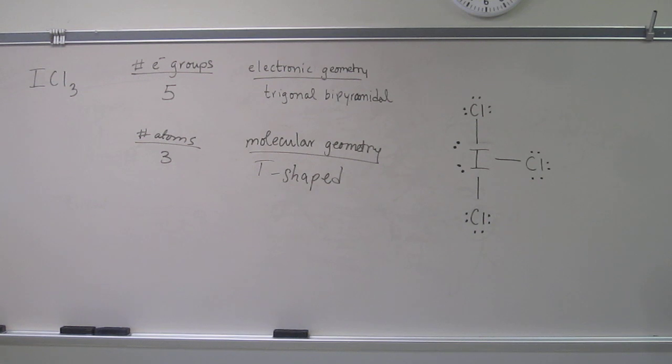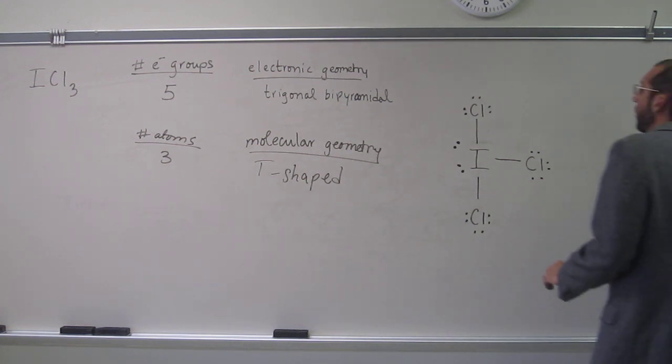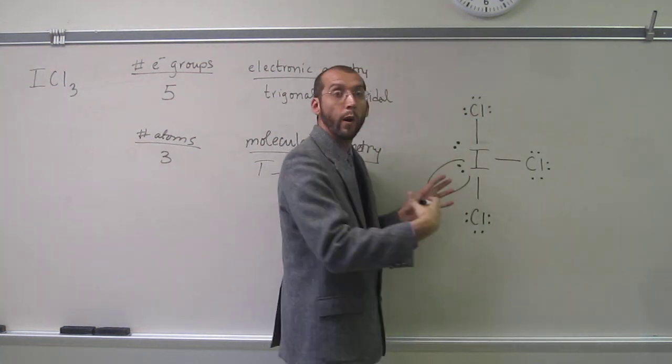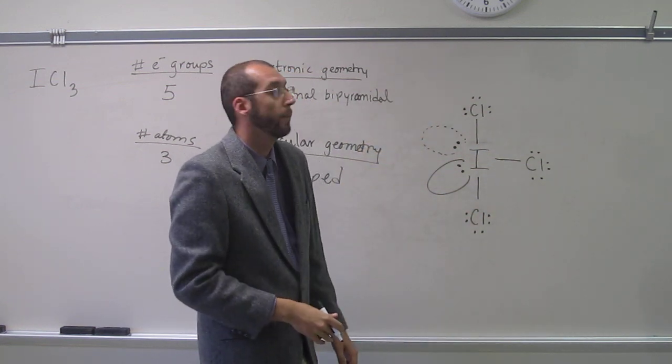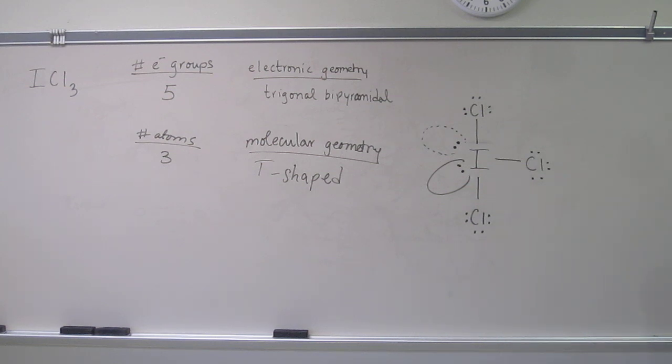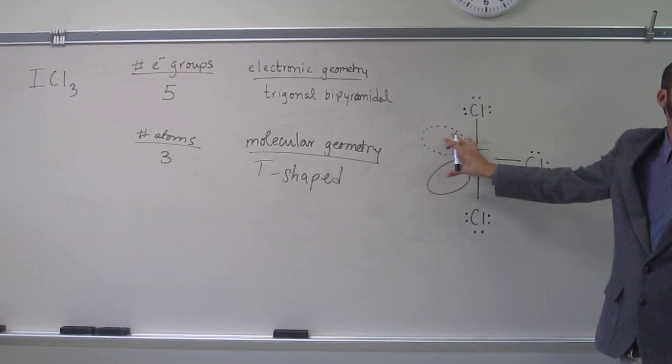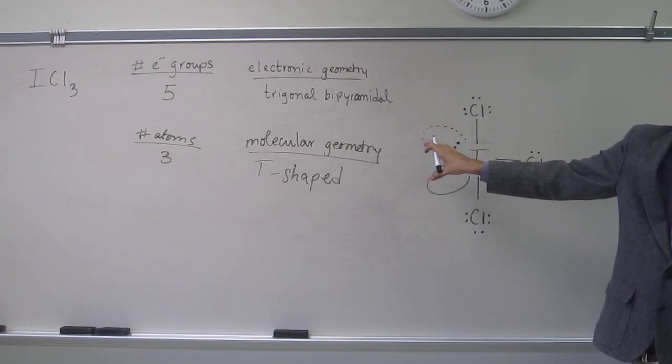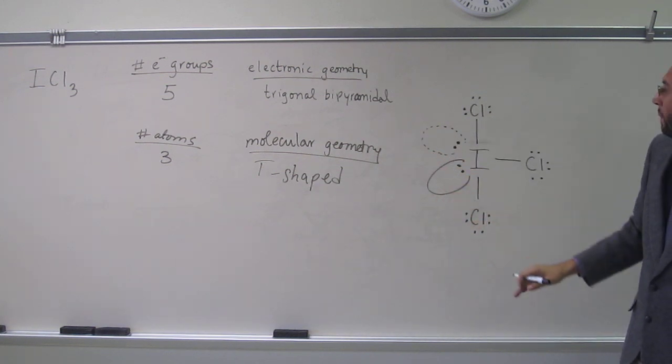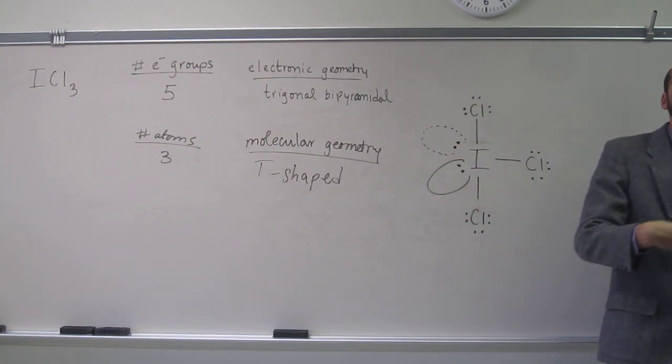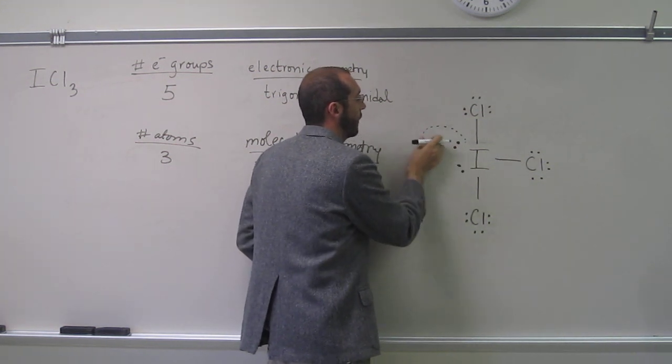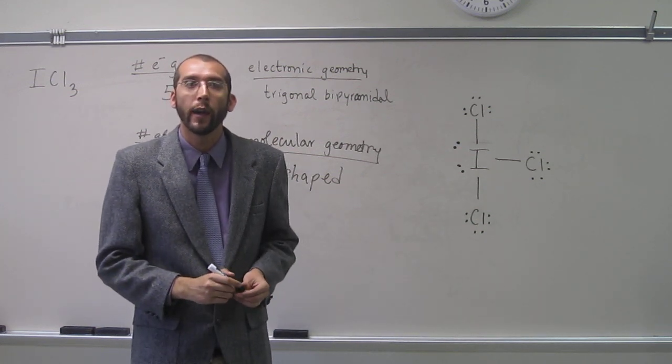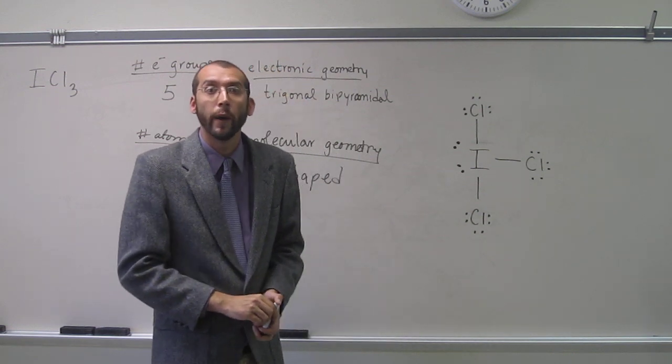But that structure would be the Lewis structure? So in this case, again, the molecular and the Lewis structure are the same. Because you've got to remember that this lone pair here is coming out towards us, like this, and this lone pair is actually kind of going back away from us. So I think it's easier to see in this kind of diagram that the computer drew. But you're going to have to write things like this on the page. And this, yes, would be the same as the Lewis structure as well. This is a good question.